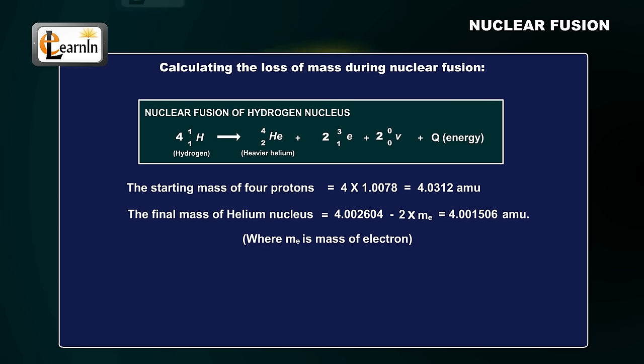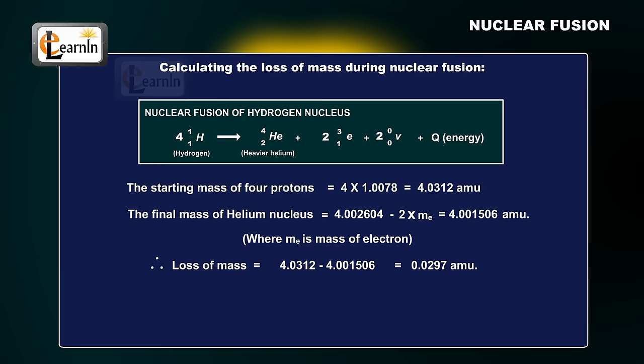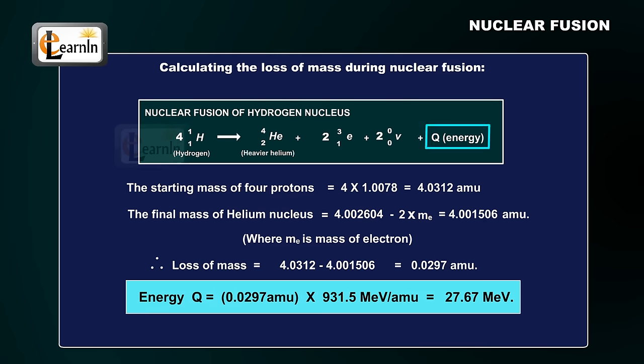Therefore, the loss of mass is 4.0312 minus 4.001506, which is equal to 0.0297 amu. This is equivalent to the energy given by Q equals 0.0297 amu times 900 mega electron volts per amu, which is equal to 27.67 mega electron volts.